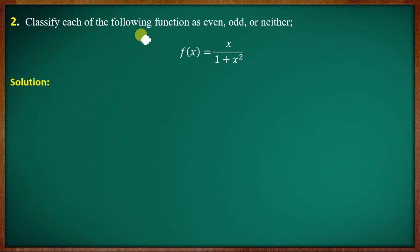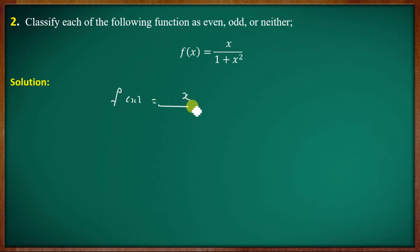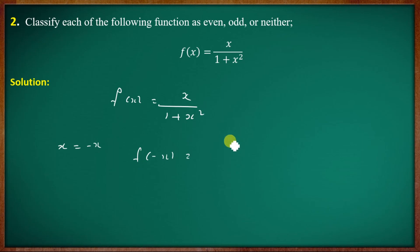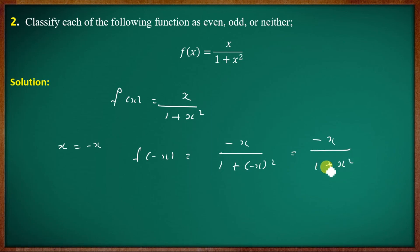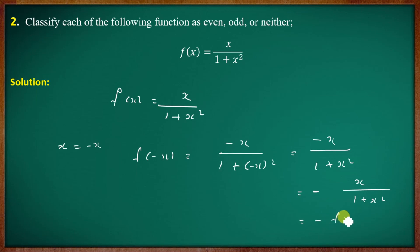Classify each of the following functions as even, odd, or neither. f of x equal to x by 1 plus x squared. Substituting x equal to minus x: f of minus x equals minus x by 1 plus minus x all squared, which equals minus x by 1 plus x squared, which equals minus f of x.